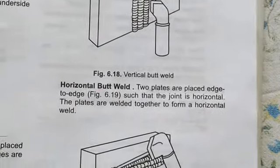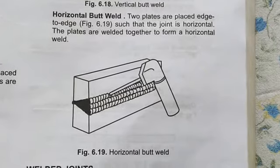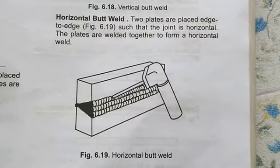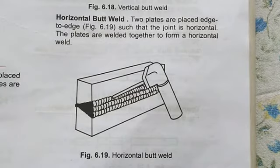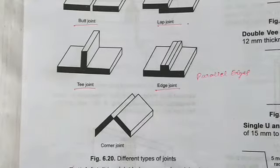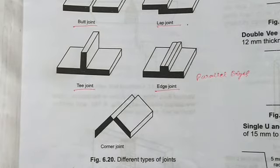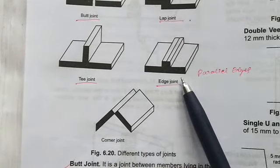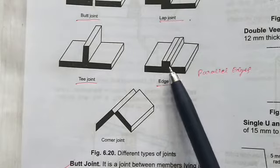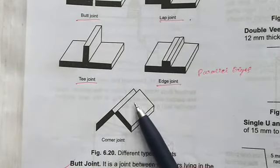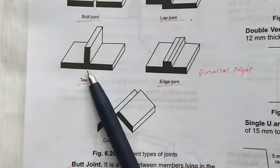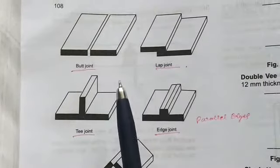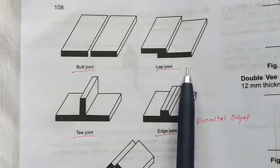In the horizontal butt weld, the plates are placed edge to edge so that the joint is horizontal. You can also see different types of joints: edge joint (edge to edge), corner joint, T-joint, butt joint, and lap joint.